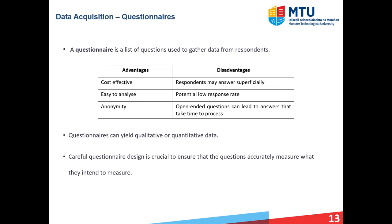Now that we've looked at the various sampling methods, let's look at how you acquire the data. There are many ways to do this, but we'll consider a few. The first method is a questionnaire, which is a list of questions that gathers data from respondents. Advantages include being cost effective, easy to analyze — you take your data, put it on a computer and analyze it — and questionnaires can be set up to be anonymous, which hopefully means respondents will answer honestly.